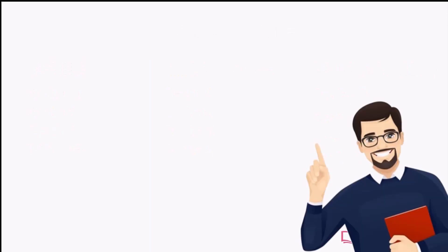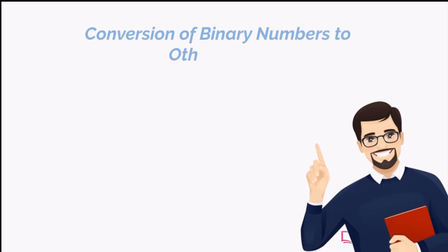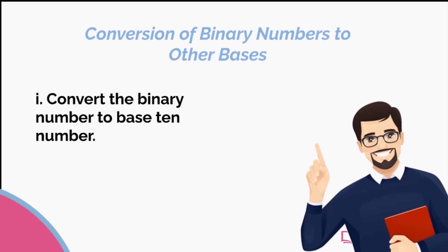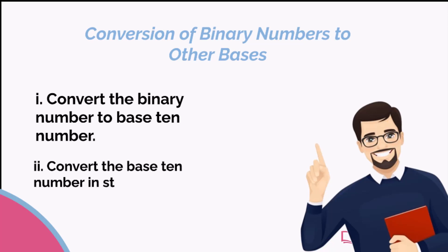We had also learned how to convert base 10 numbers to binary and vice versa. Now let's learn how to convert binary numbers to other bases and vice versa. To convert binary numbers to numbers in other bases, the following steps must be taken: Step 1, convert the binary number to a base 10 number. Step 2, convert the base 10 number from step 1 to the required base.